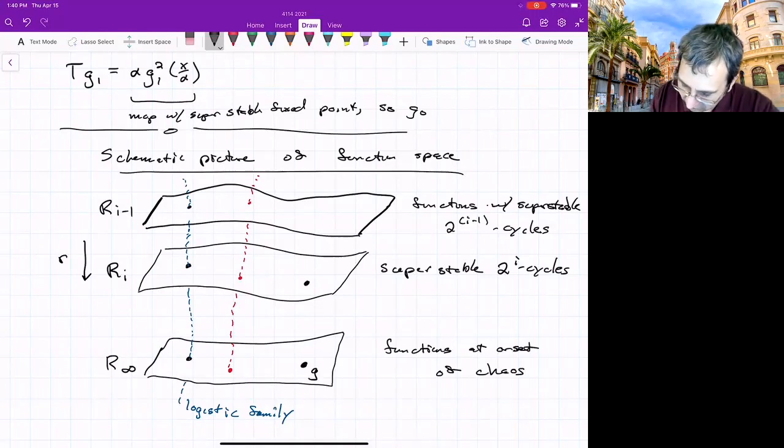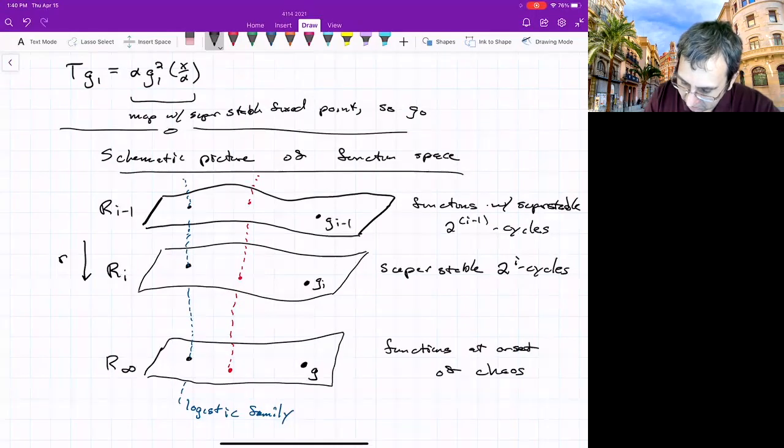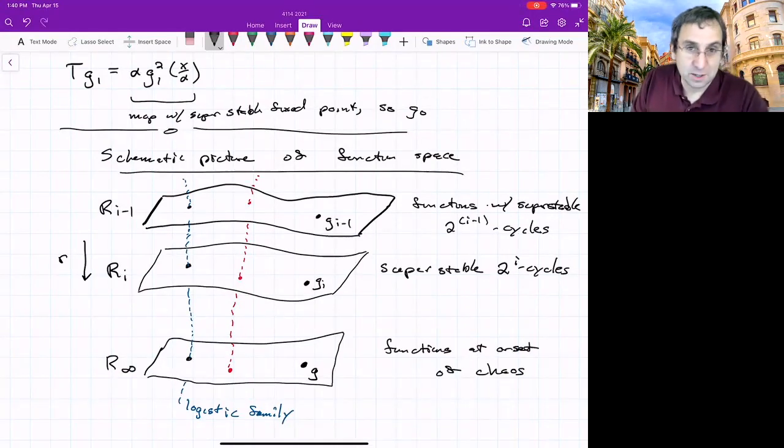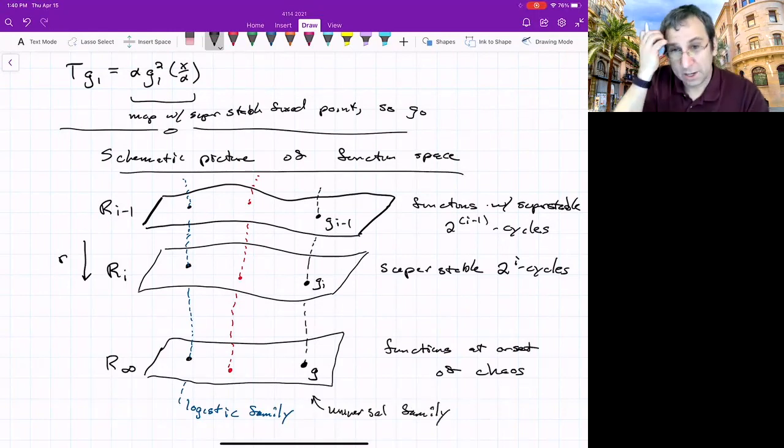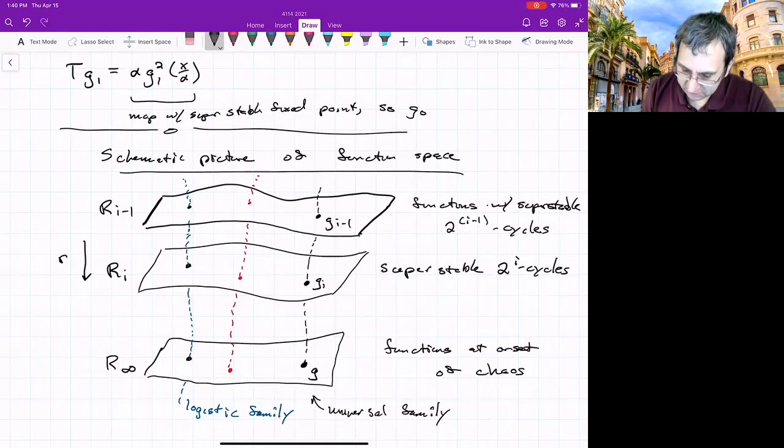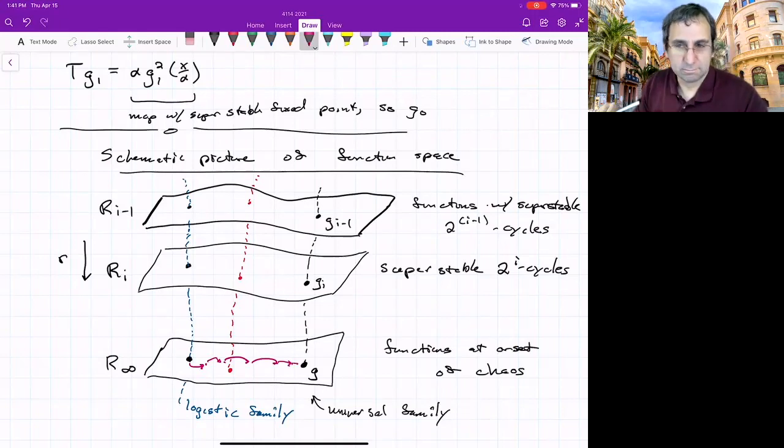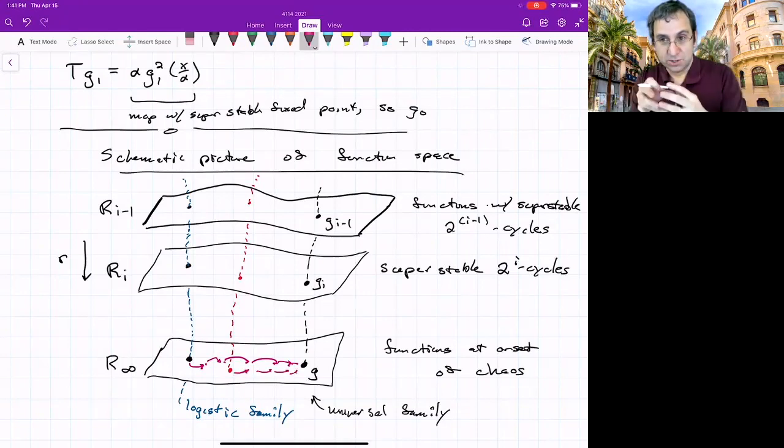And there'll be a g_i and g_{i-1}. So we could even think of the universal family of functions. And why is it called universal? It's called universal because if you start iterating under T with any of these as the initial point. So let's say here's the logistic map. If you start operating, then it'll take you to point after point after point, but it's going to be converging. As we go on and on to g, the universal function. So any and every function eventually under repeated iterates of T merges onto g.